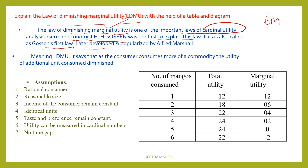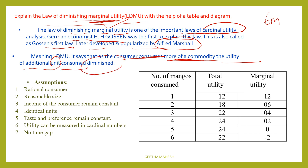Later, it was developed and popularized by Alfred Marshall. The law of diminishing marginal utility states that as a consumer consumes more of a good or commodity, the utility of each additional unit consumed diminishes.